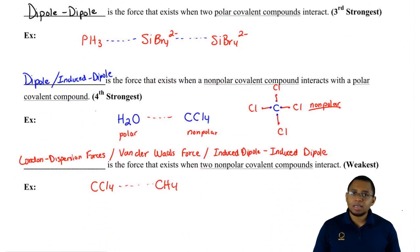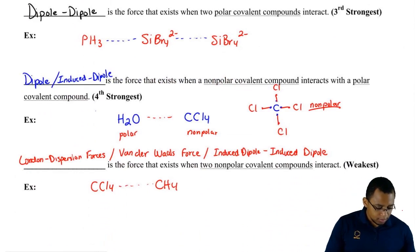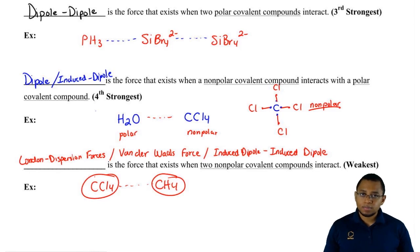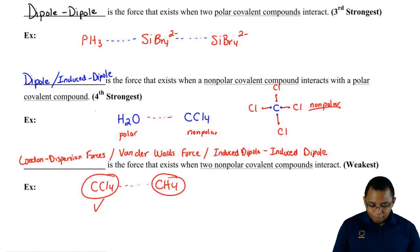When it comes to London Dispersion forces, compounds with London Dispersion as their only force—the more they weigh, the greater their London Dispersion will be. These two compounds are both non-polar, so they both fundamentally have London Dispersion as their only force. CCl4's London Dispersion will be greater than CH4 because CCl4 weighs more. The more you weigh, the greater your London Dispersion.